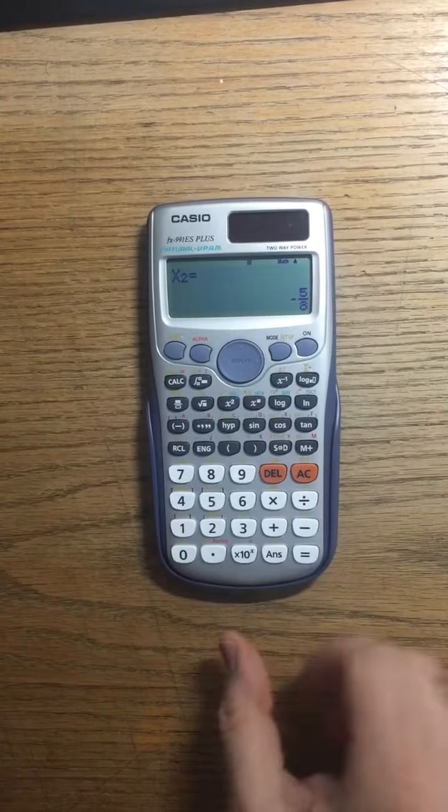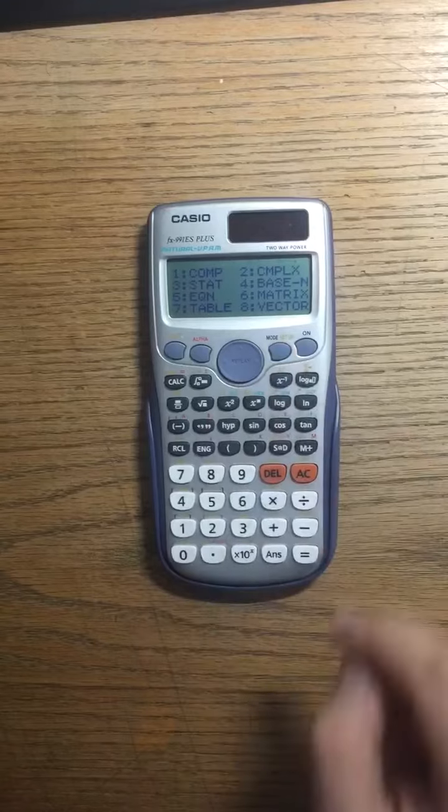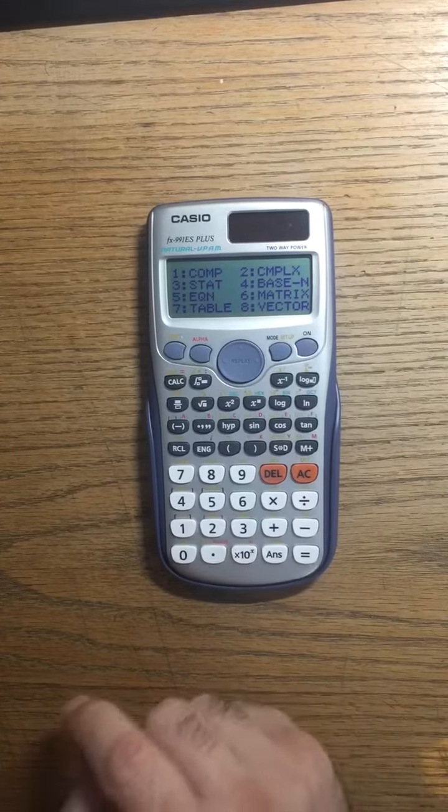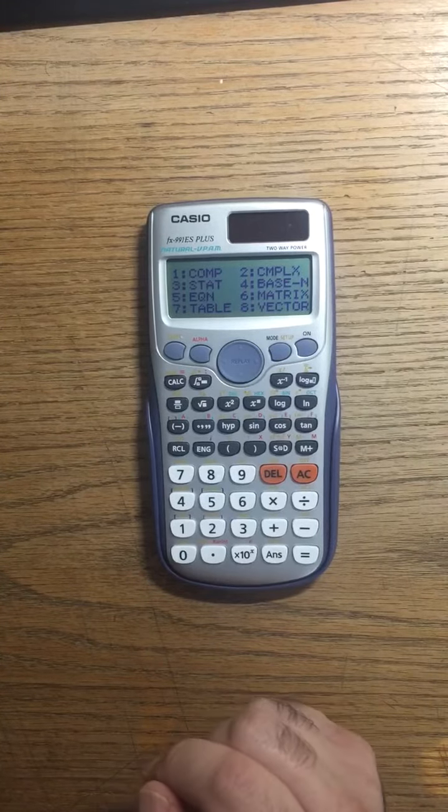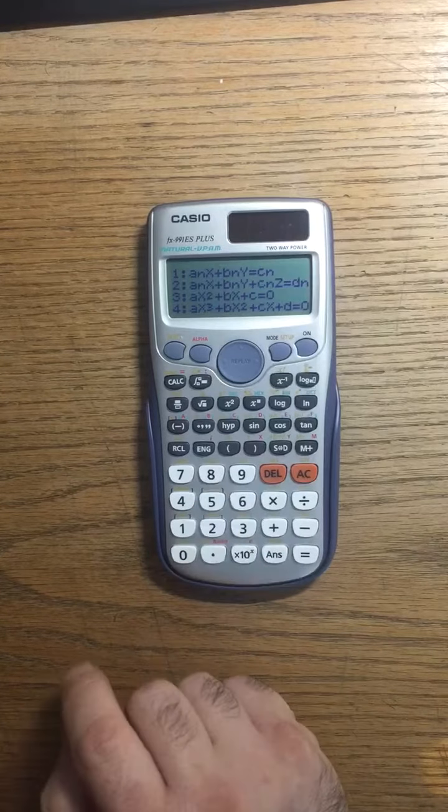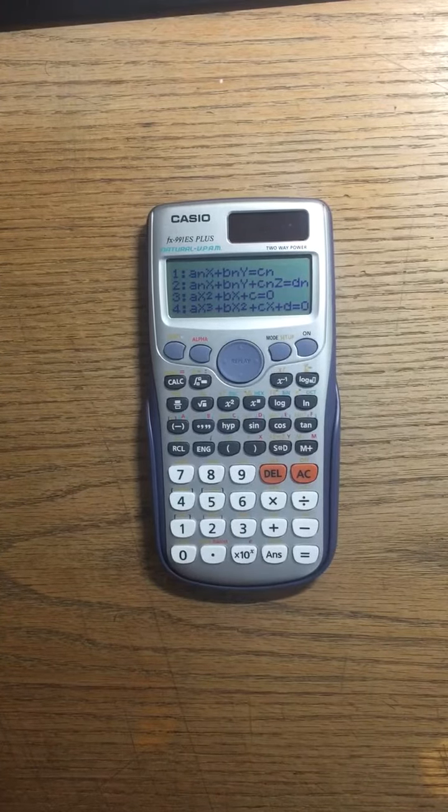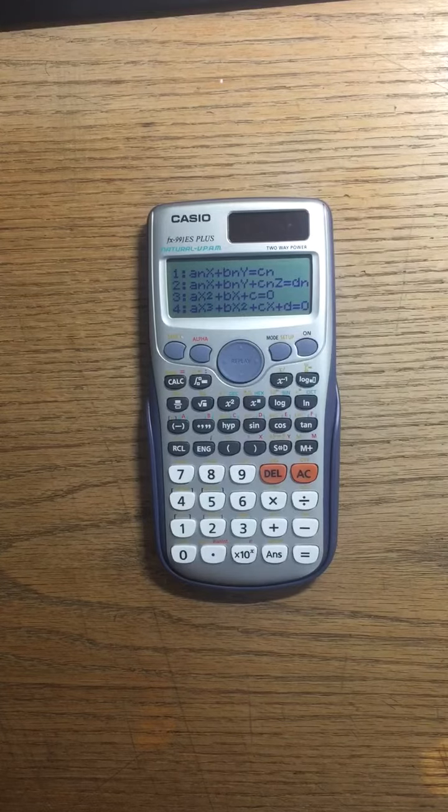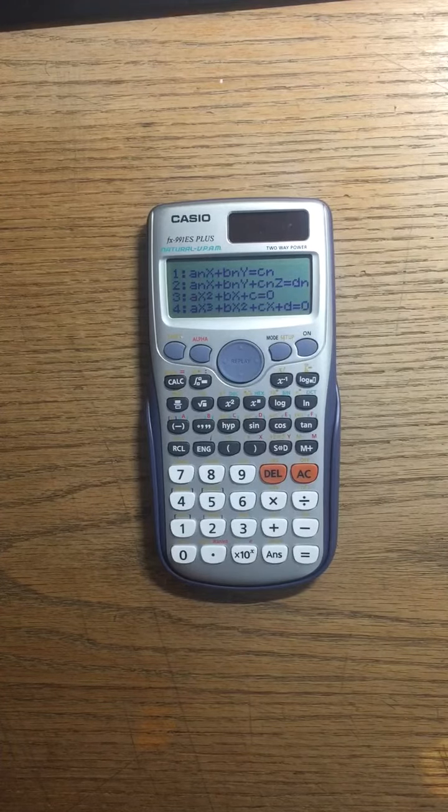Okay, so first go to mode, go to equation, which is 5. Now we have a quadratic equation because x squared is a quadratic equation, so I go to 3.